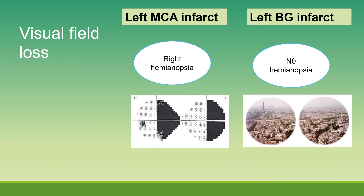Left MCA infarct also causes right hemianopsia, a loss of visual field on the right side. Left basal ganglia infarct typically does not cause hemianopsia.